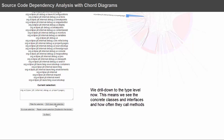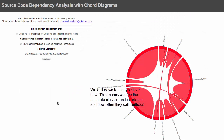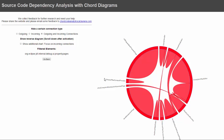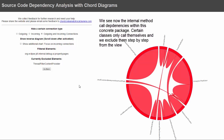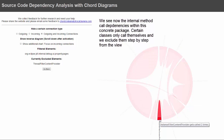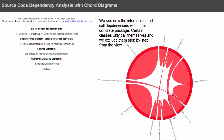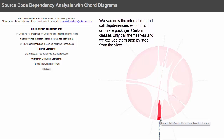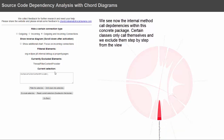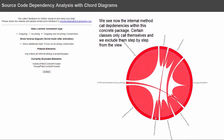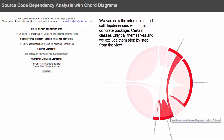I drill down into this specific package and get down to the real types — the actual classes. I can see which classes are calling which classes. I select a class and say exclude. Now I can see this class calls that, or both incoming and outgoing at the same time. This class seems only to call itself, so I select it and say exclude from selection, because I just want to see the classes that are calling each other.